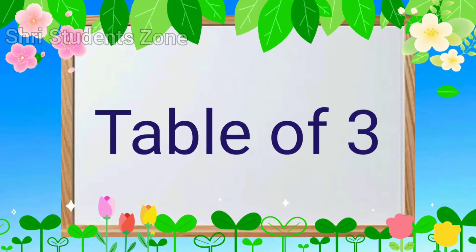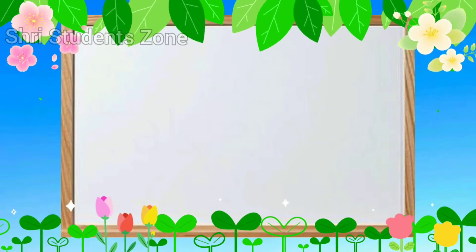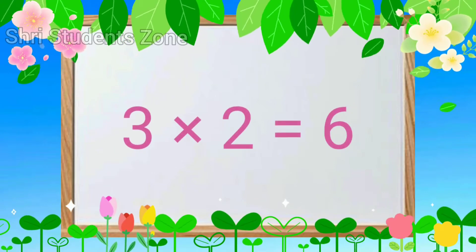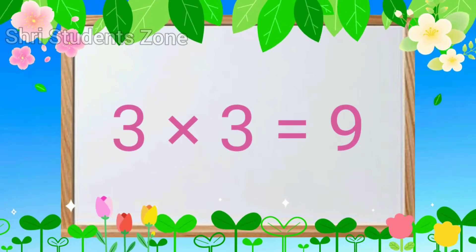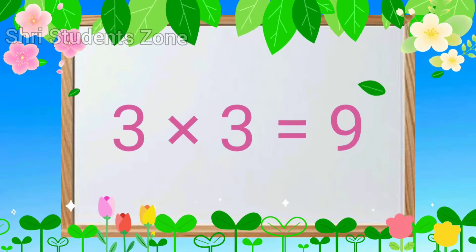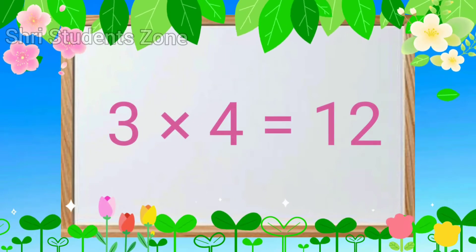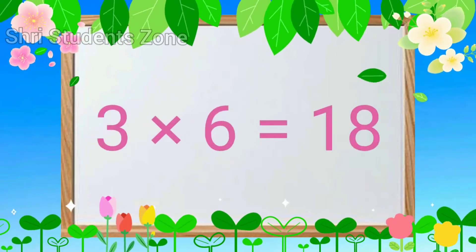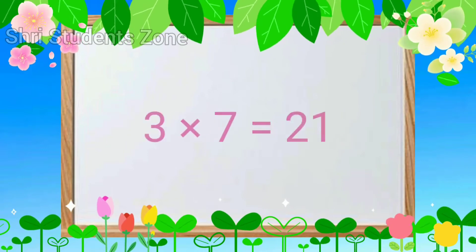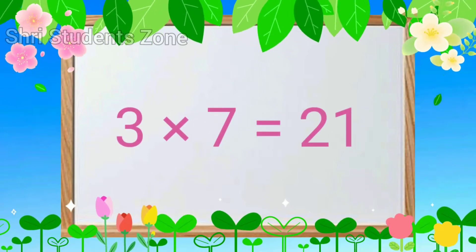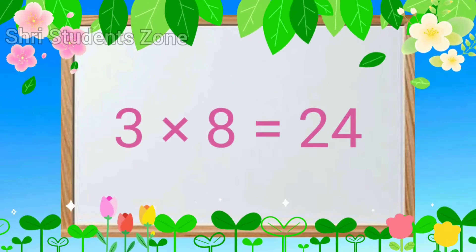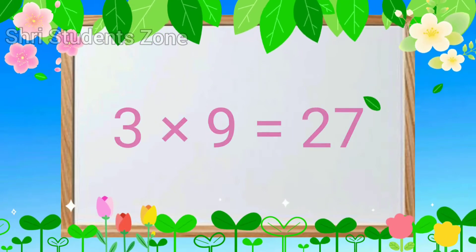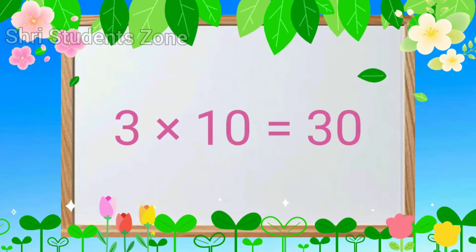Table of 3. 3 1s are 3, 3 2s are 6, 3 3s are 9, 3 4s are 12, 3 5s are 15, 3 6s are 18, 3 7s are 21, 3 8s are 24, 3 9s are 27, 3 10s are 30.